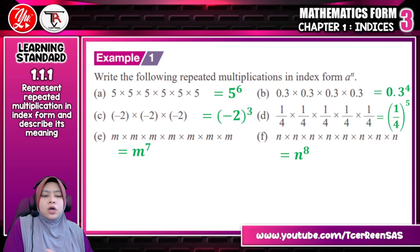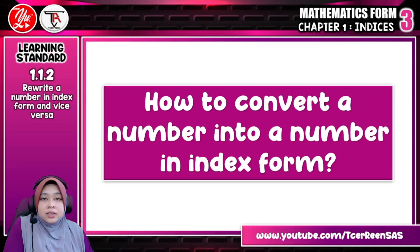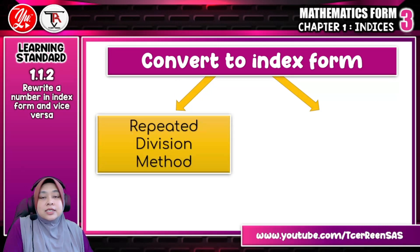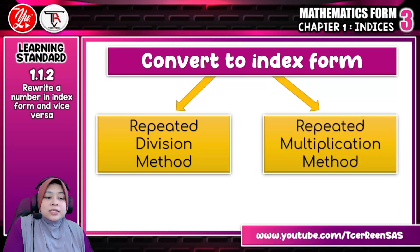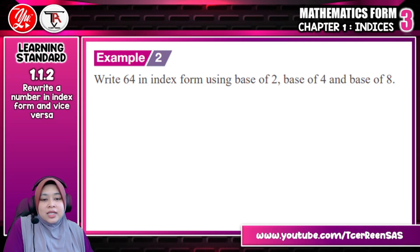That's all for this part where we represent repeated multiplication in index form. Now we go further to the next part: how to convert a number if we are given a number and want to convert it to index form. To convert any number to index form, there are 2 methods you can use. The first method is called the repeated division method. The second one is the repeated multiplication method. Let us look at the repeated division method first.